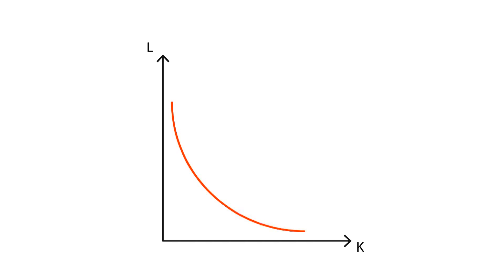This represents a common isoquant curve. The curve joins points where a constant number of output is produced by using different combinations of inputs.